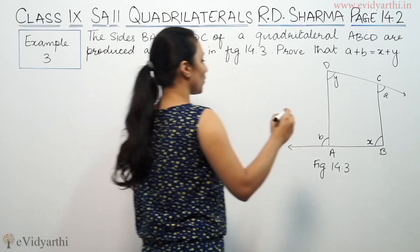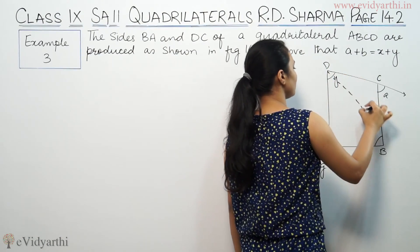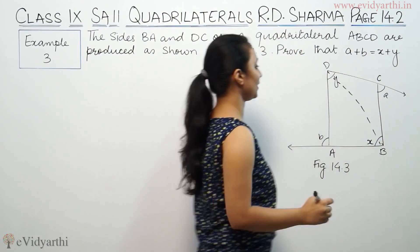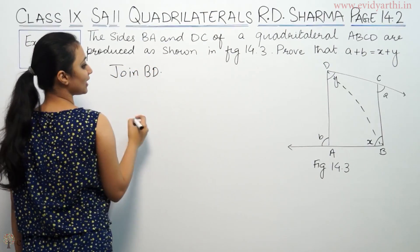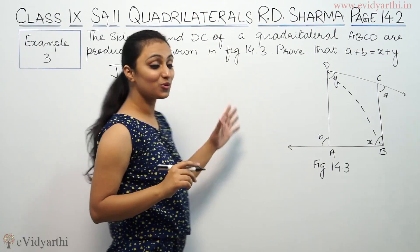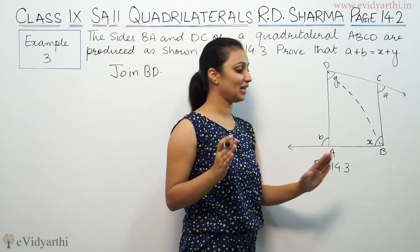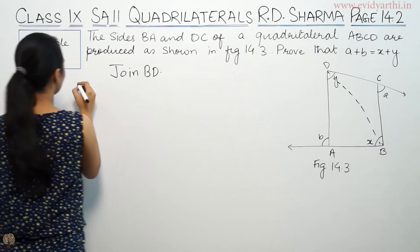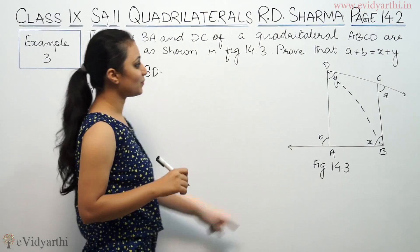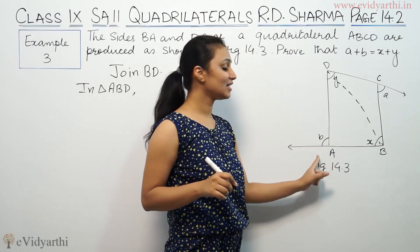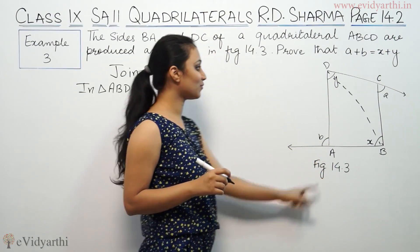The first thing is join BD. This angle plus this angle is equal to this angle, exterior angle property.